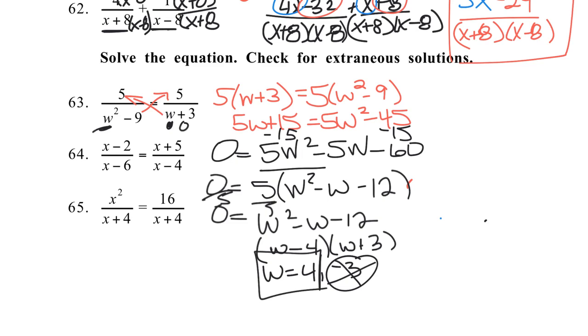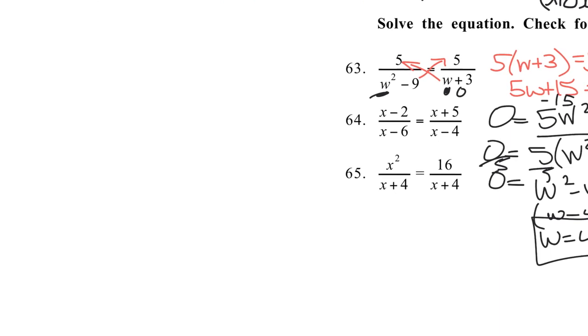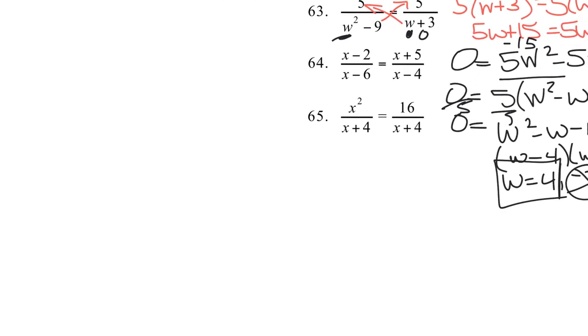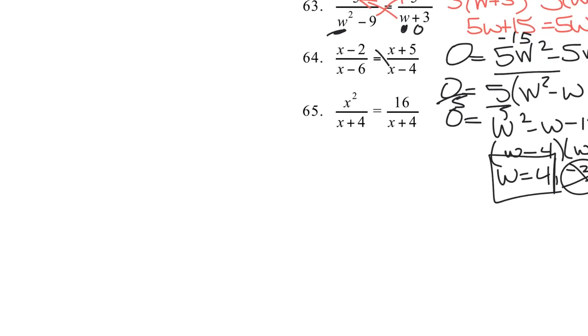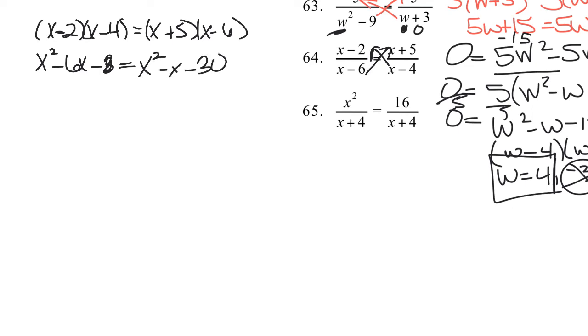We're going to do number 64. Again, it's a proportion, so I can cross multiply. So I get x minus 2 times x minus 4 equals x plus 5 times x minus 6. So multiply that out. x squared minus 6x plus 8 equals x squared minus x minus 30. Look at the foiling, see how I did that, and I get negative 6x plus 8 on that side.